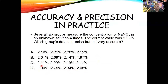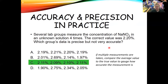For group C: 2.11, 2.09, 2.10, and 2.18. The precision is less than one percent — all values are within one percent of each other. But they aren't very accurate because the average is about 2.1 and the actual value is 2.20. So the answer is C. If multiple measurements are taken, compare the average to the true value for accuracy, and compare the values to one another for precision.